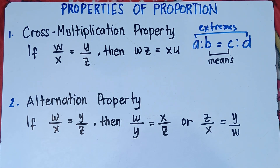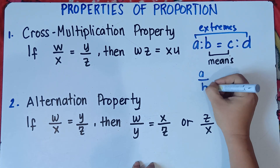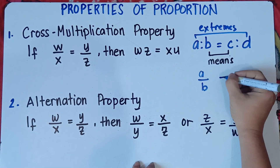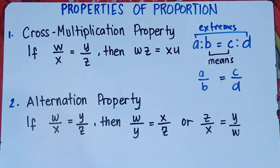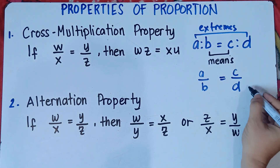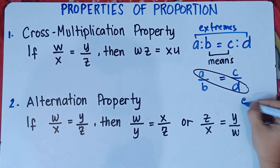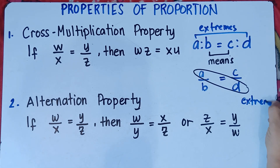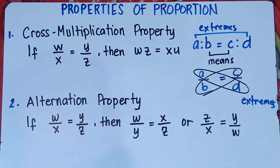You can write this one into fraction: A over B is equal to C over D. A and D are the extremes, and B and C are the means.